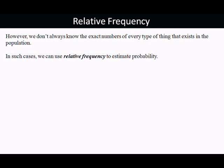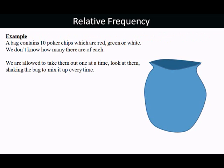But you don't always know exactly how many there are of everything. You know that there are 52 cards in a pack, but you don't know other things like that in relation to other situations. And in such a case, you use relative frequency to estimate probability.